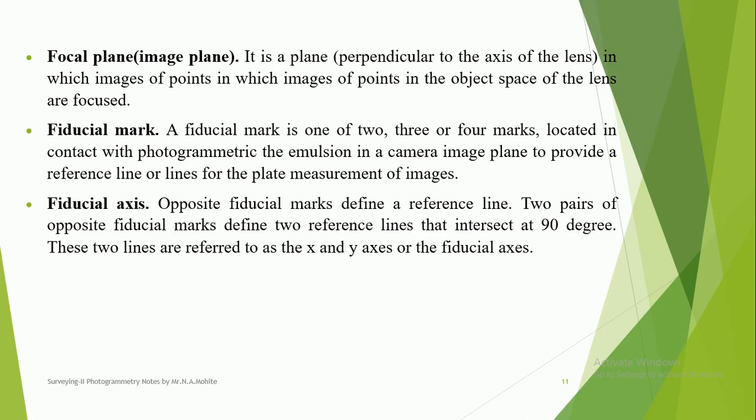Fiduciary marks are one, two, three, or four marks located in contact with the photogrammetric emulsion in a camera image plane to provide a reference line or lines for the measurement of images. Fiduciary axis: lines joining opposite fiduciary marks define a reference line that intersects at 90 degrees — these two lines are referred to as the x and y axes or the fiduciary axes. Fiduciary marks and fiduciary axes are required for detailing of the surface of the earth.